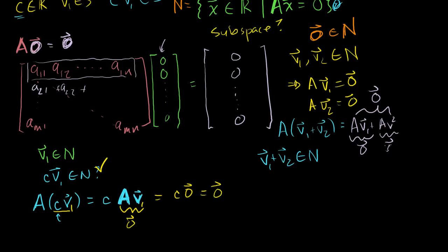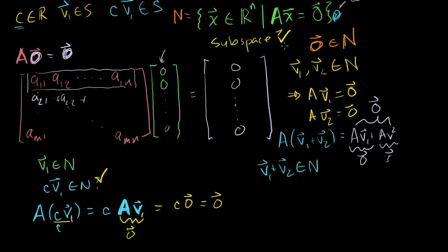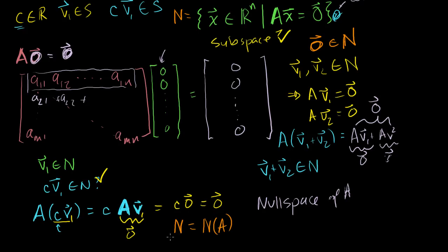So this set n is a valid subspace. It contains the zero vector, it's closed under addition, and it's closed under scalar multiplication. We actually have a special name for this — we call n the null space of A. The notation is N(A), or the null space of A. So literally, if I give you some arbitrary matrix A and say find me N(A), your goal is to find the set of all x's that satisfy the equation A times x equals zero. And I'm going to do that in the next video.